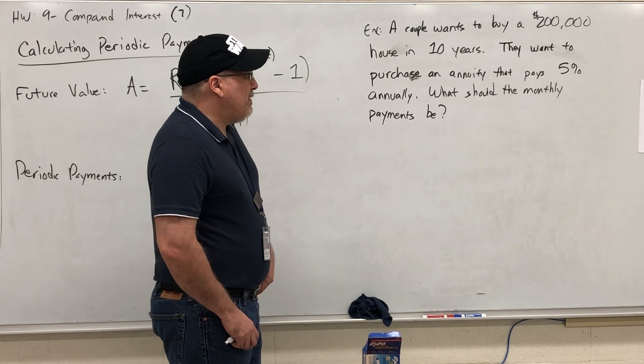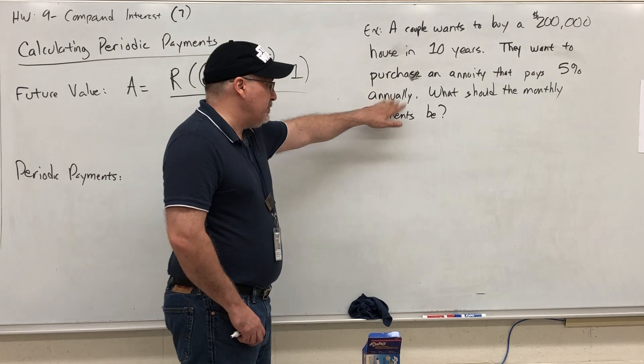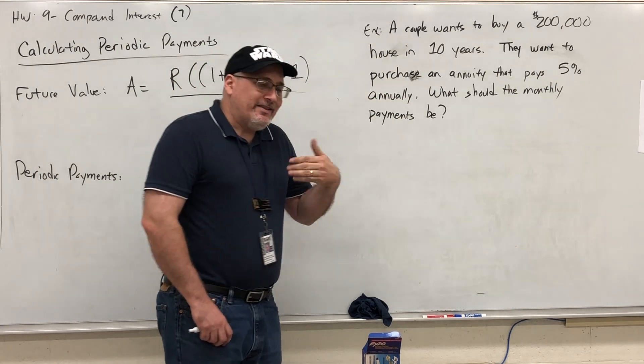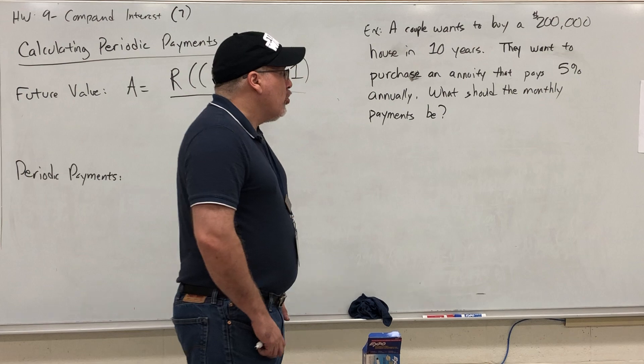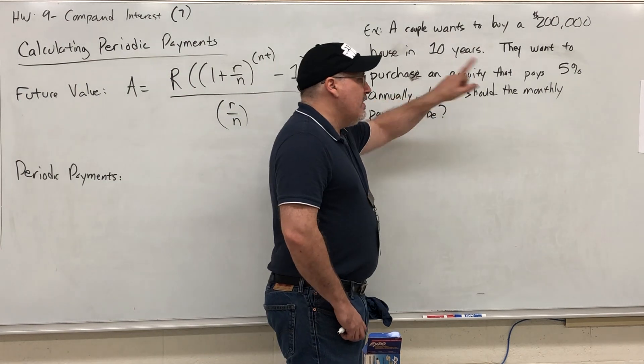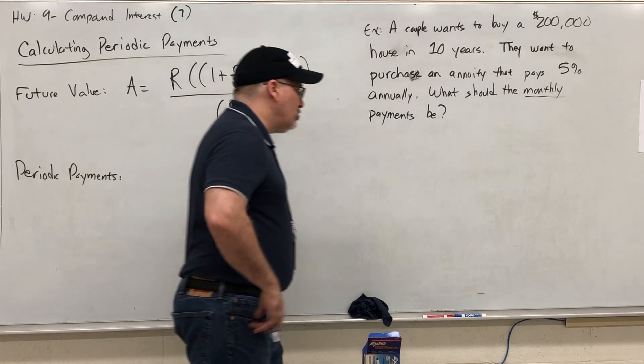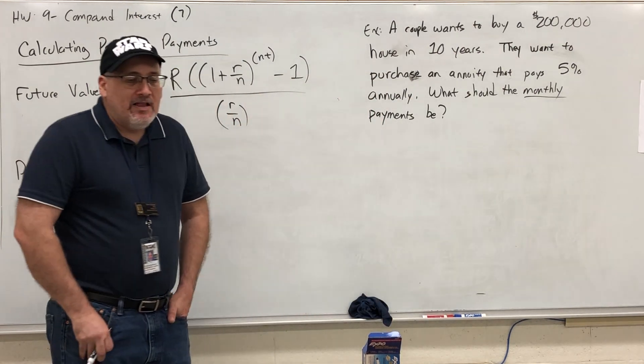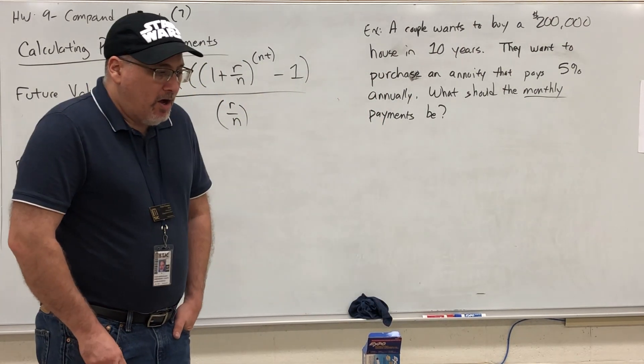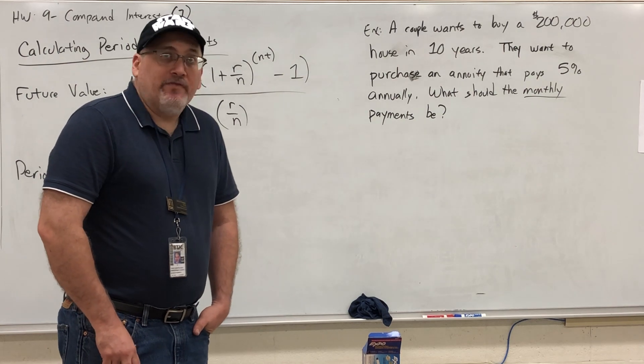Now be careful. When I say pay 5% annually, that just means it's the annual interest rate. That doesn't mean they're getting interest one time per year. Remember, in an annuity, the frequency of the interest matches the frequency of the payments. So if they're going to make monthly payments, then we will be getting interest 12 times per year.